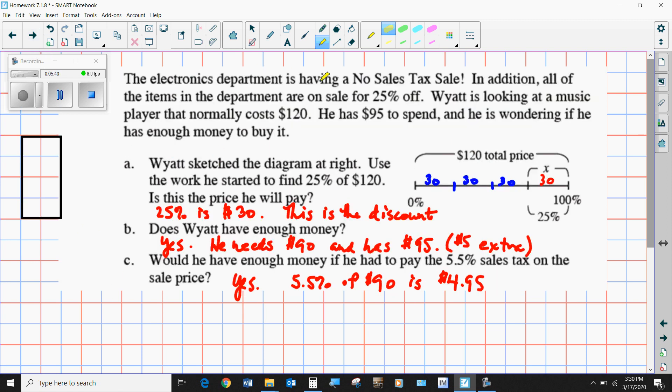The electronics department is having a no sales tax sale. In addition, all the items are 25% off. So remember I was talking about multipliers? If you want to find the amount of the discount, take 25%. If you want to find out how much they're going to pay, you take 75%. Y is looking at a music player that normally is $120. He has $95 to spend. Does he have enough money?